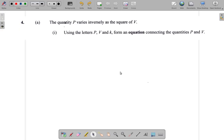Let's look at question four of the CSEC May 2019 past paper. It says the quantity P varies inversely as the square of V.